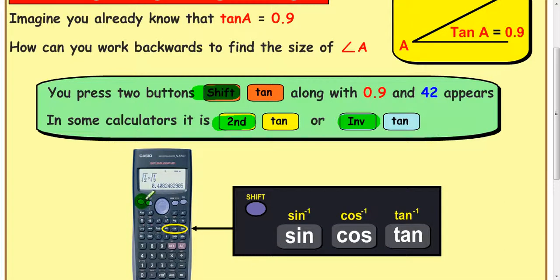These shift, second function, and inverse buttons are generally found up in the top corner of the calculator. If you hit that and then one of the sine, cos, or tan buttons, it gives you access to the inverse functions written with a small negative one above the function name. So inverse sine is here, inverse cos is here, and inverse tan is here.